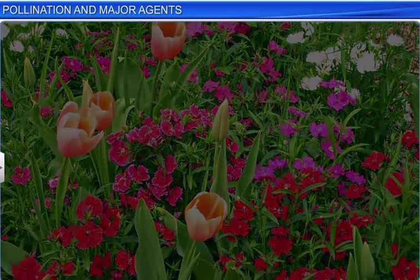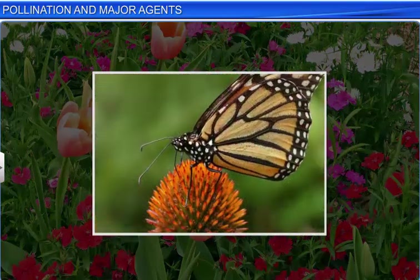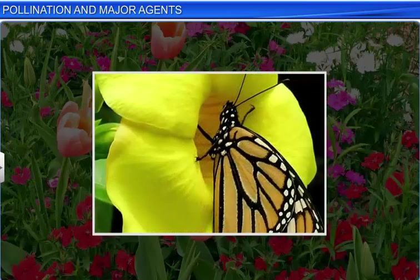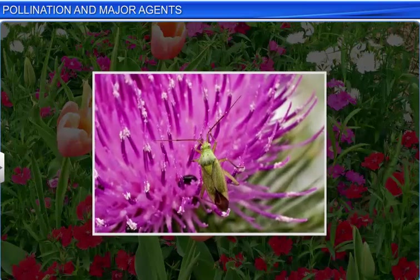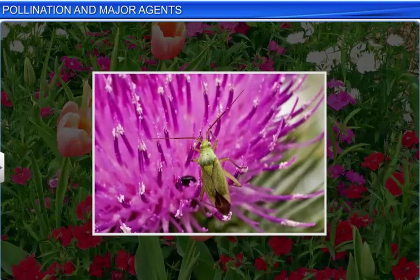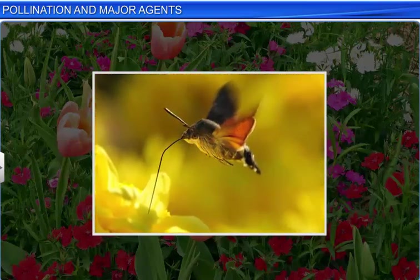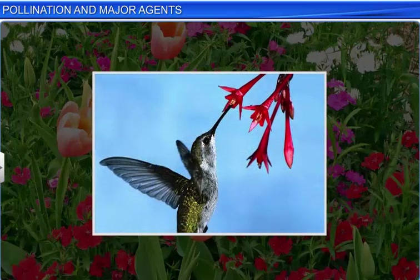Conversely, flowers pollinated by butterflies are usually lightly scented and brightly colored, with nectar not very deeply hidden. While those pollinated by beetles and flies secrete a rotten odor. Flowers pollinated by birds, on the other hand, have large, odorless, orange or red tubes which are rich in honey.